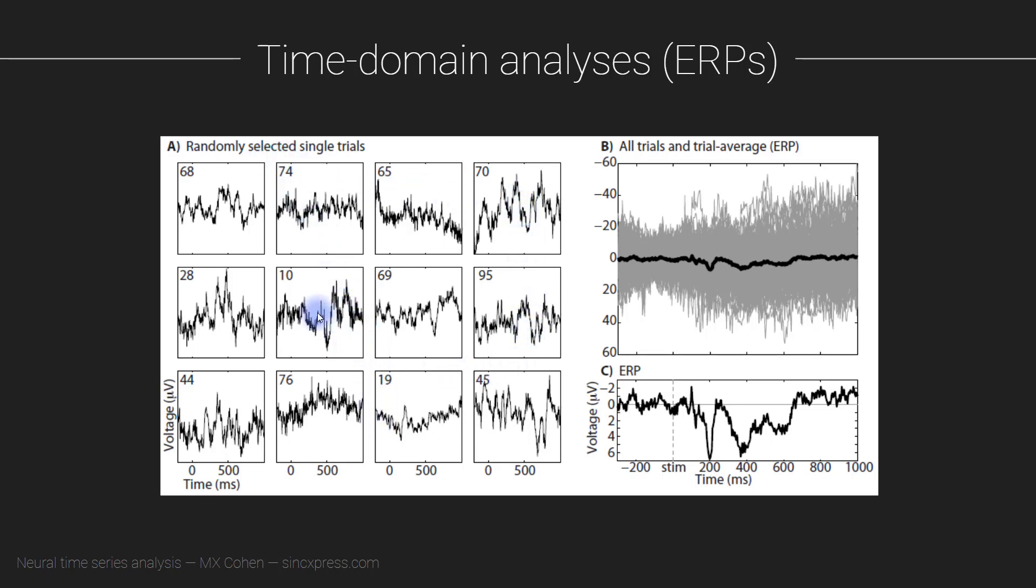So what you're looking at here on the left in this panel are 12 individual trials, 12 snippets of data, all coming from the same electrode taken from different trials of the experiment. These are 12 individual trials. You can see there's not really obviously consistent patterns appearing visually to the naked eye across these 12 different trials. And here in this panel, what you're looking at is 99 trials overlaid on top of each other.